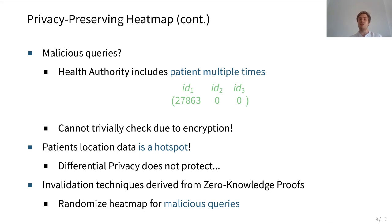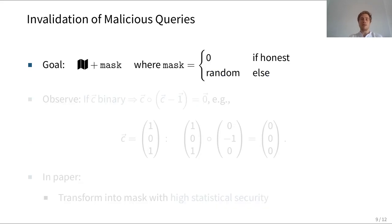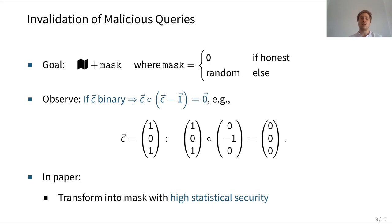We have derived invalidation techniques from zero-knowledge proofs to protect against this kind of attack. The goal is to add a mask to the heat map: if the client query is honest and contains only zeros and ones, the mask equals zero and does not affect the heat map; if malicious behavior is detected, the mask becomes random values and invalidates the heat map. Our technique relies on one simple observation: when you subtract one from each element of the vector and multiply it with the original vector, the result is the zero vector if and only if the initial vector contains only zeros and ones. In the paper we show how to transform this observation into a mask that provides high statistical security, ensuring that malicious queries cannot reveal any individual's location data.